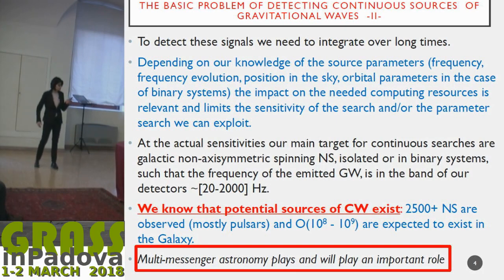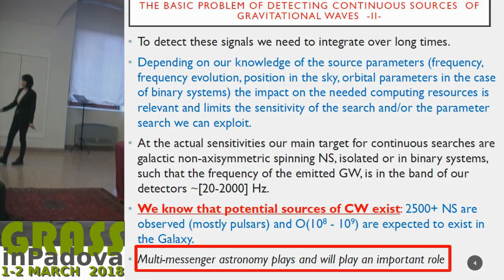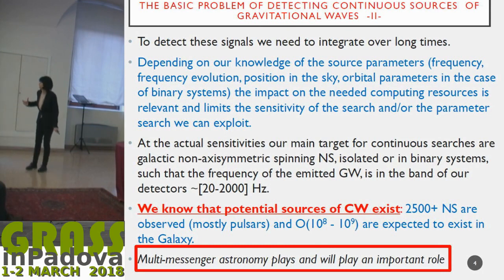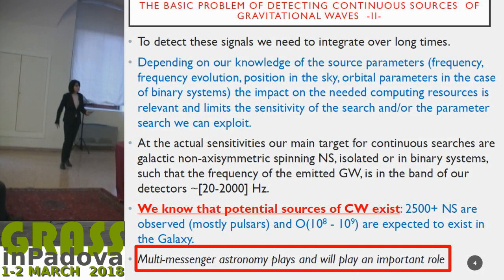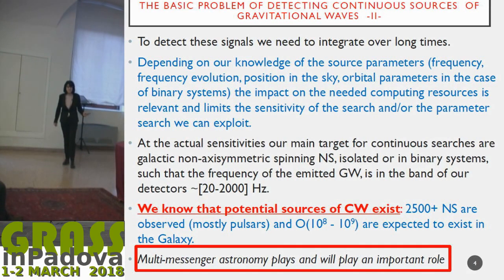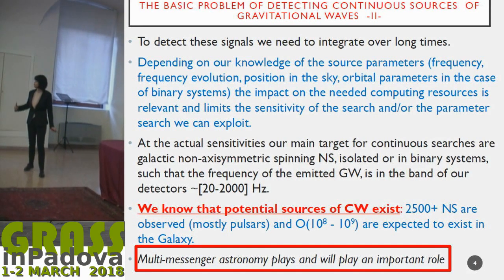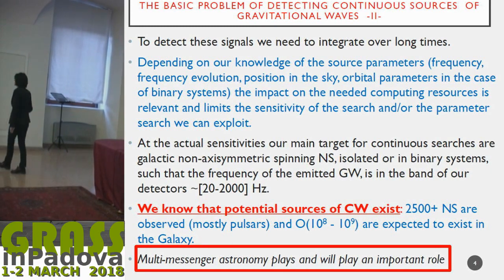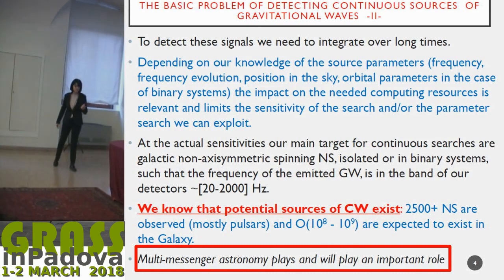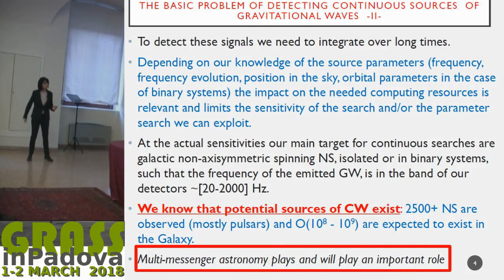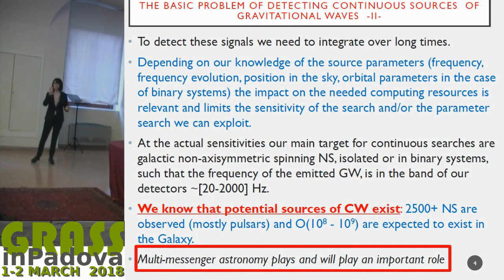It's a field in continuous evolution. Multi-messenger astronomy is very important also in this case. The role is completely different because we don't need the low latency, at least in general. But we need someone who, for example, tells us the parameters of the pulsars which have been observed, like Vela and Crab, because we need to know the ephemerides and whether there is a glitch or not. Other information we might receive from the community will be very important to reduce the parameter space of the search.